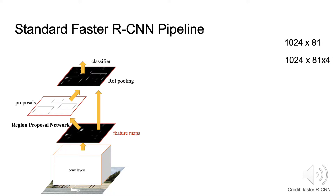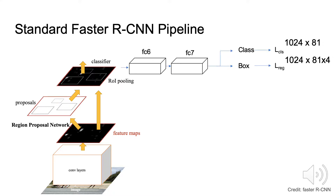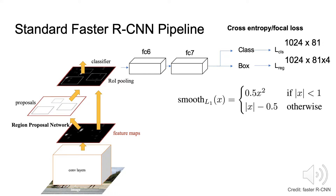A brief recap on the Faster RCNN pipeline: you have RPN for initial classification and localization, and a Faster RCNN head which uses cross-entropy and smooth L1 loss for localization. The whole pipeline does not take such ambiguities of the ground-truth bounding boxes into account.